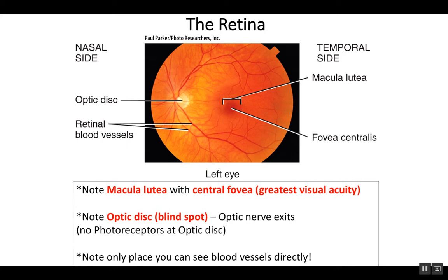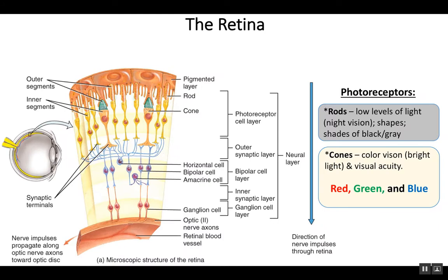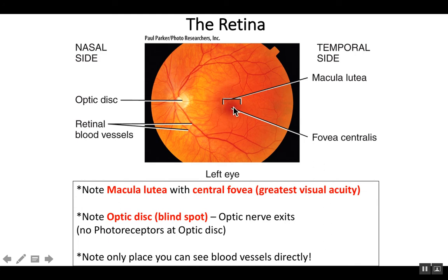There are two reasons why the central fovea gives us our best visual acuity. First, it has a high concentration of cones, which give us our best visual acuity. Second, the central fovea lacks the other two neuron layers. When light has to travel through the ganglion and bipolar cell layers, it gets disrupted a little bit. In the central fovea, those layers move over to the side so light can hit the rods and cones directly, giving us better vision. Therefore, this region of the retina is the best region for visual acuity.